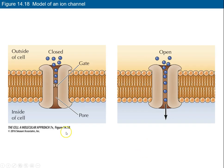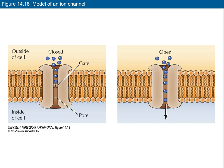Most ion channels are gated — when closed, ions cannot move through. When the gate opens, say for a sodium channel, sodium ions will move through based on their concentration gradient. When talking about movement of ions, an electrical gradient also comes into play, because there is a charge across the membrane — a membrane potential — and that will influence the direction of ion movement.